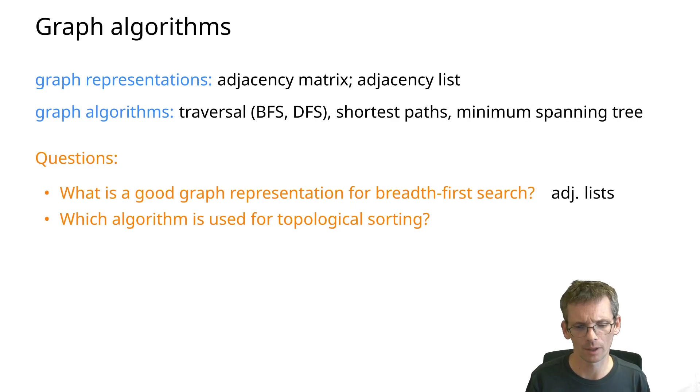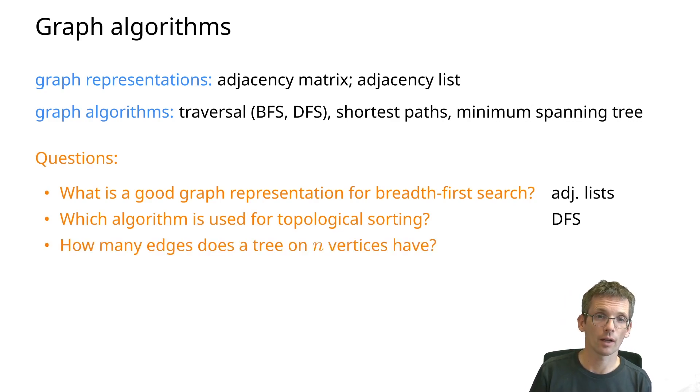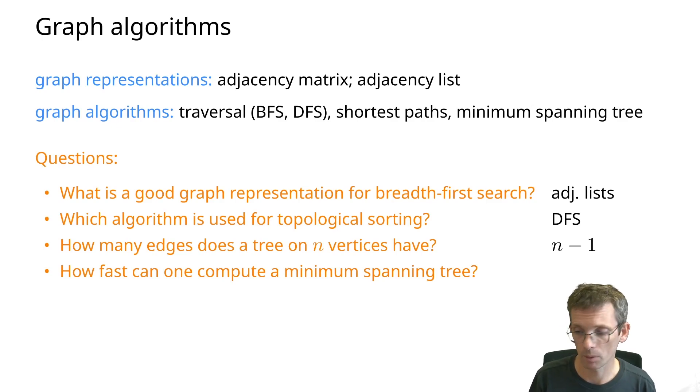What algorithm do you use when you do topological sorting, at least typically? That would be depth-first search. How many edges does a tree on n vertices have? This is not an algorithmic question, but a pure graph question. If I have a tree on n vertices, I would have n minus 1 edges.